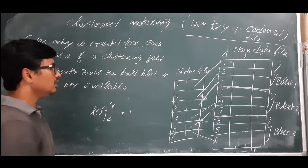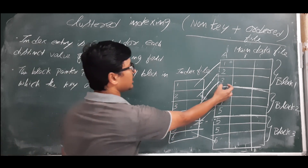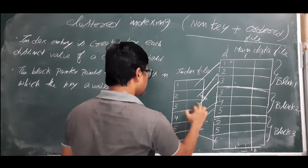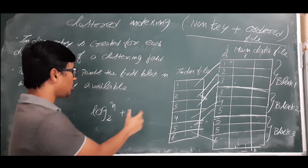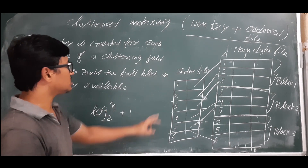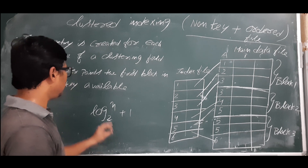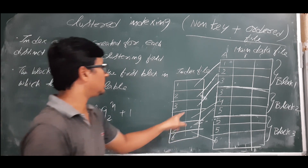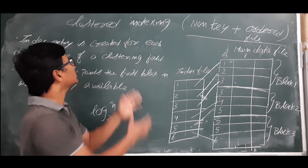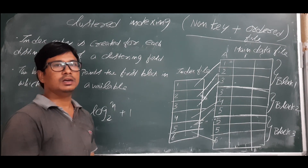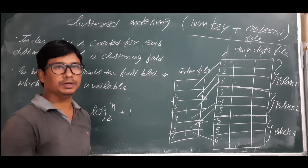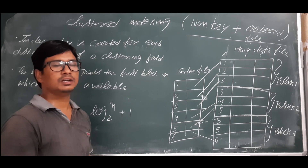Once we find the block in the index file, we use the block pointer to access the corresponding block in the data file — hence log₂(n) + 1, where n is the number of blocks in the index file. I hope you have understood what clustered indexing is. Thank you, and please like, share, and subscribe for further updates.